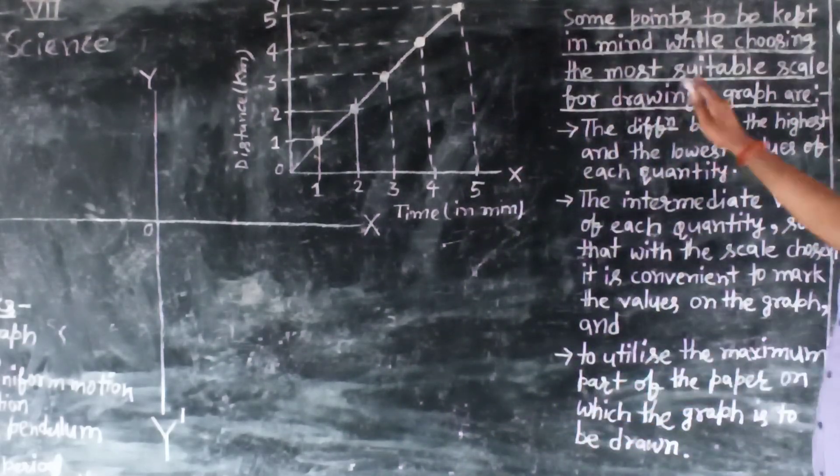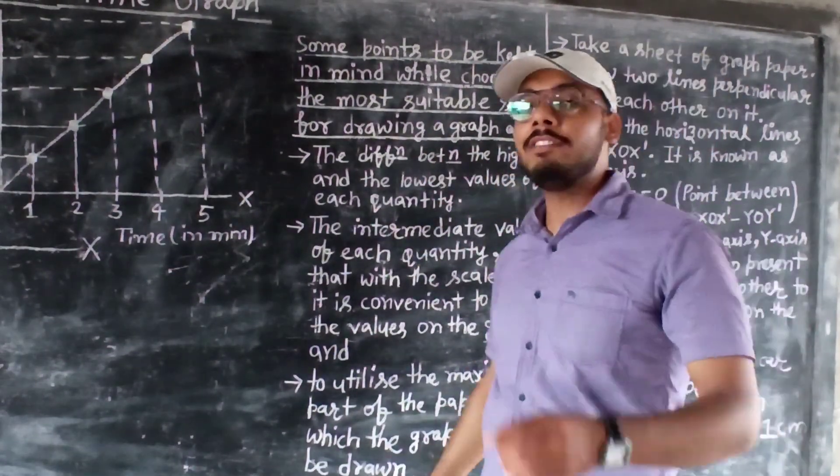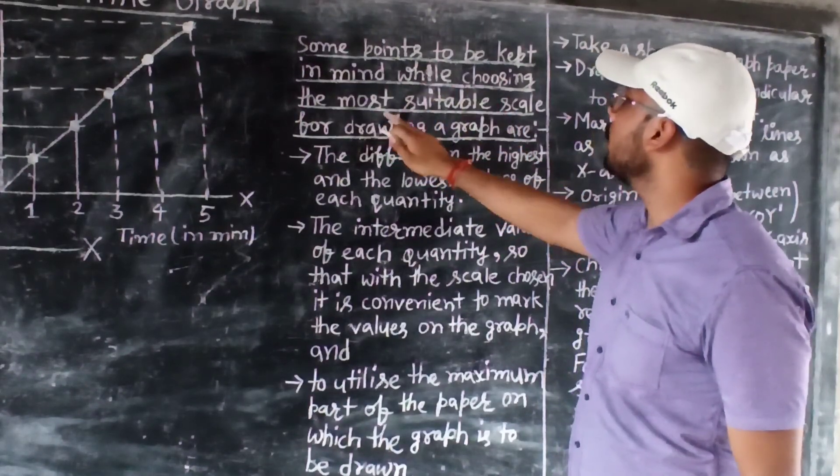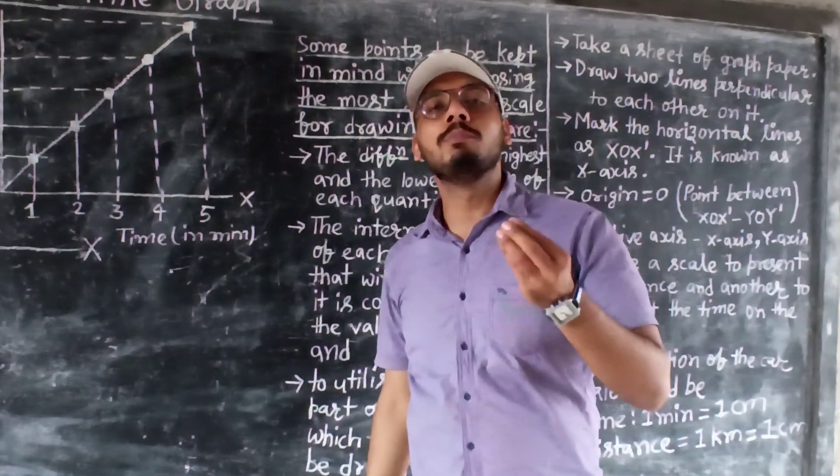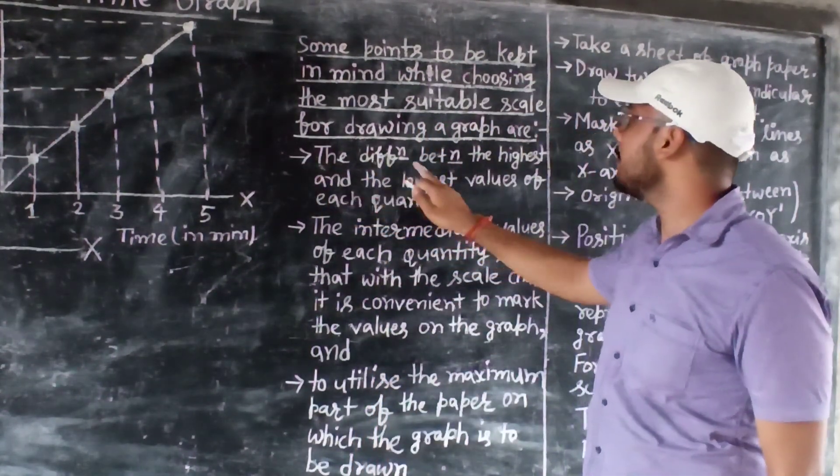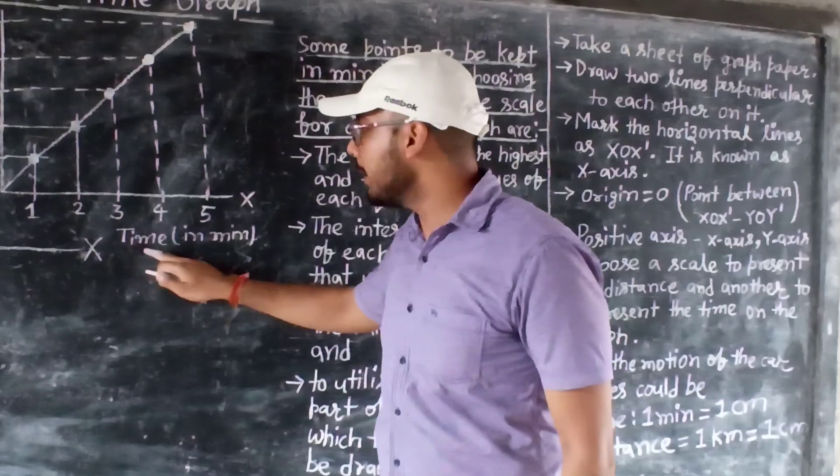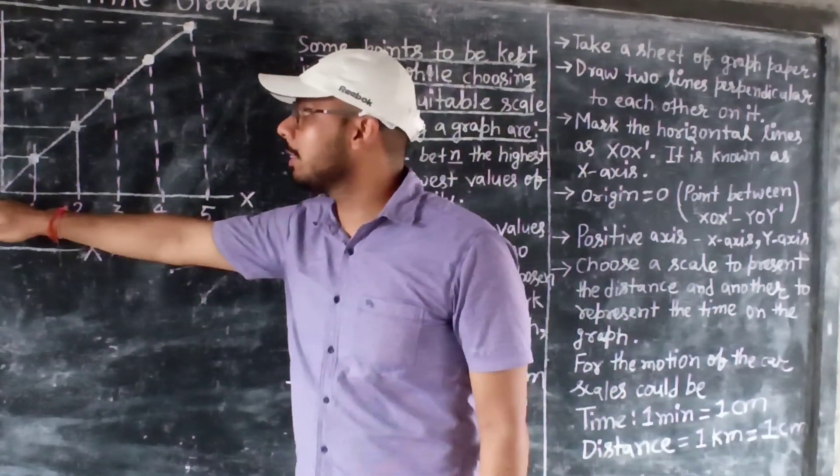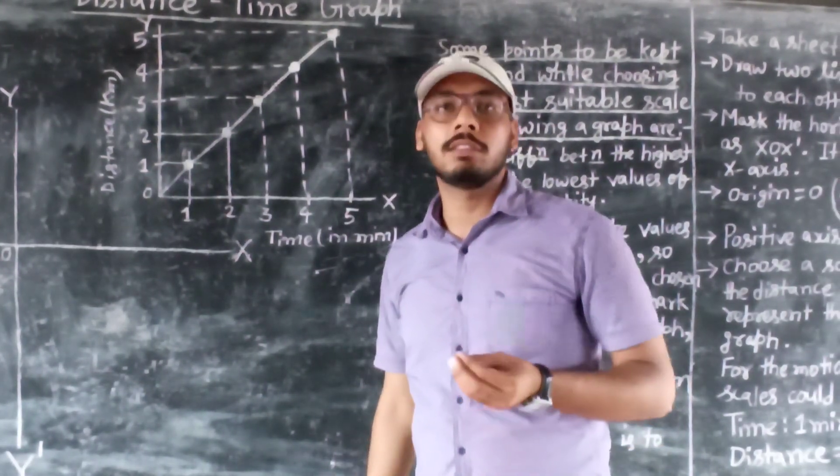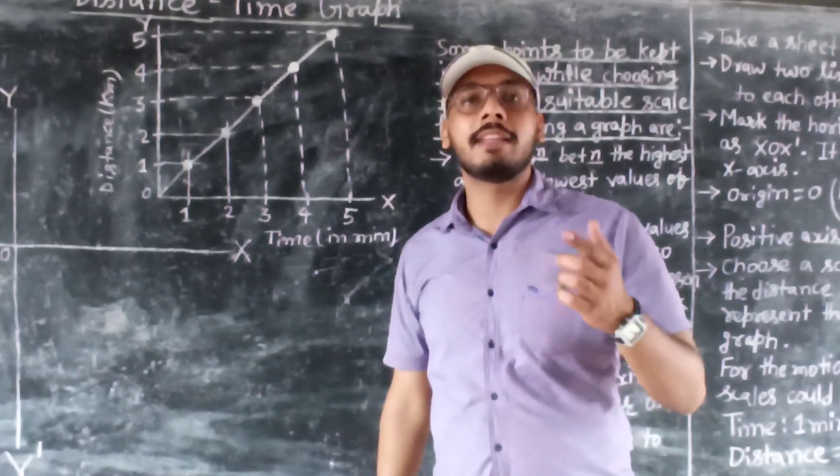And some points should be kept in mind while choosing the most suitable scale for drawing a graph. And I will tell you today, how to choose the most suitable scale. For that, the difference between the highest and the lowest values of each quantity. Means if we have the quantity time and second one is the quantity distance, then we have to mind there the highest and the lowest point. Then only we can be able to find out their scale.